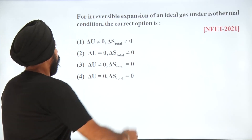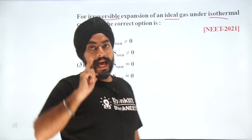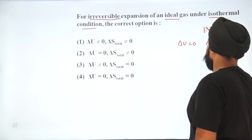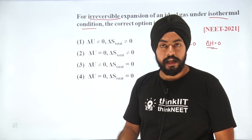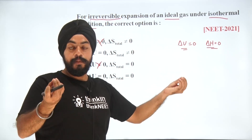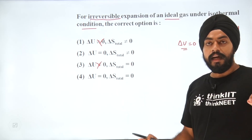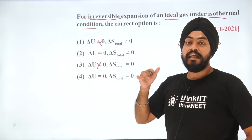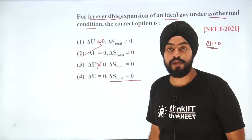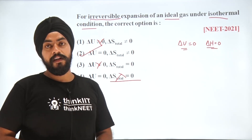The next question concerns irreversible expansion of an ideal gas under isothermal conditions. For an ideal gas under isothermal conditions, ΔU = 0 and ΔH = 0, so options stating ΔU ≠ 0 are wrong. Since the gas is expanding, the overall entropy is increasing — ΔS_total > 0, meaning it is not equal to zero. Option 4 (ΔS_total = 0) is incorrect. The correct answer is option 2, where ΔS_total ≠ 0.